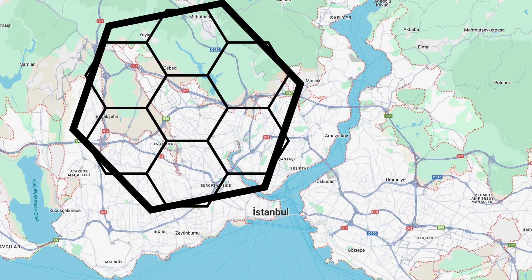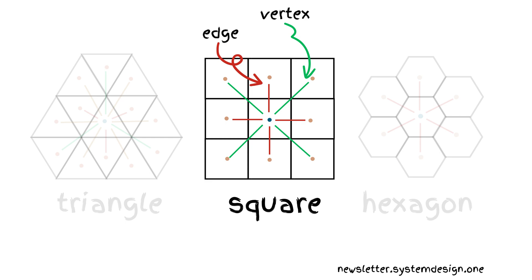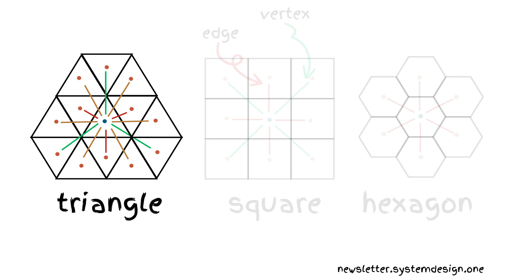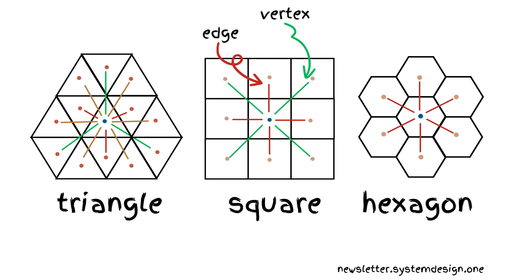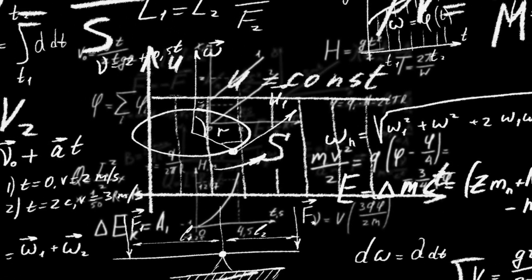They use the cell identifier as the sharding key to partition H3. They need distance between cells to find nearby drivers. H3 uses a hexagon as the cell shape to make it easier to measure the distance between two cells, because each neighboring cell is the same distance away from a cell's center, which simplifies distance measurement. While triangles have 3-distance neighbors and squares have 2-distance neighbors — because some neighbors share an edge and others share a vertex — distance measurement between cells needs extra coefficients in triangles and squares.